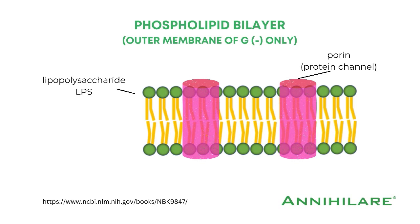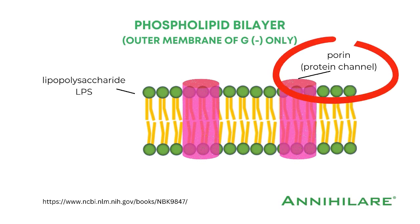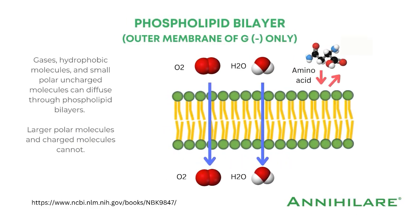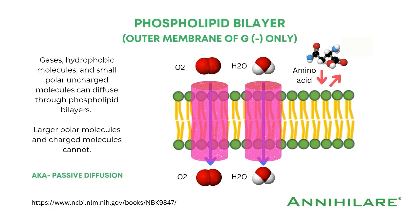But this is where it gets interesting. Within the outer lipopolysaccharide membrane, there are these little channel proteins called porin that contribute to something known as passive diffusion. They're basically like small tunnels. Passive diffusion allows certain molecular structures like oxygen and water, for example, to pass through without any energy required by the cell itself. What's important here is that these channels don't let things through that are either large in size or have a molecular charge.